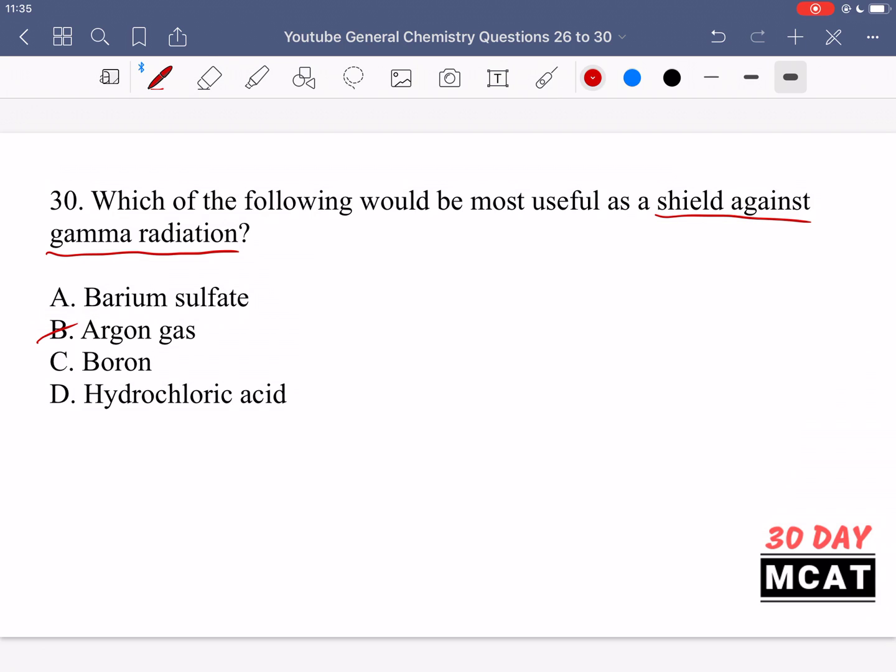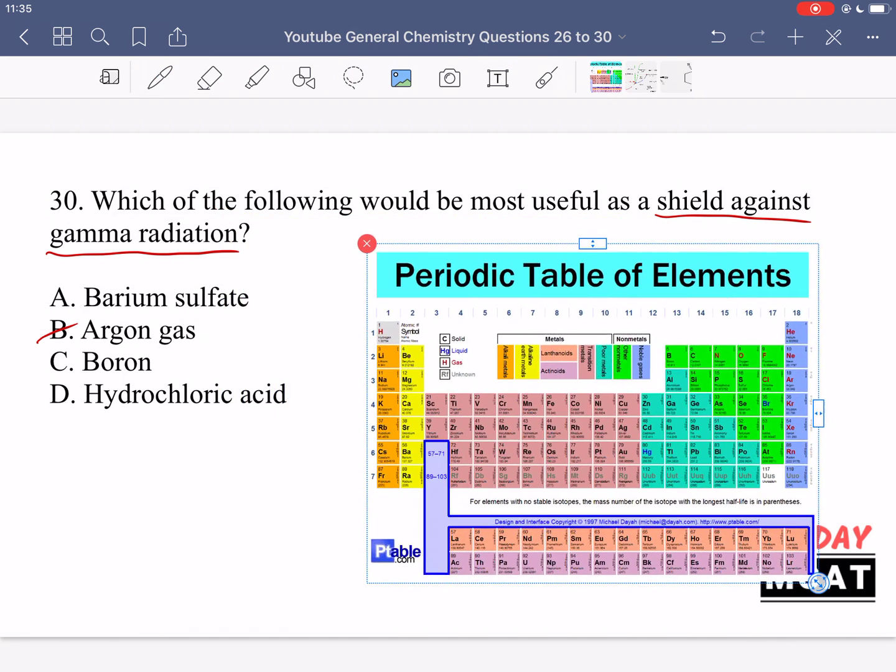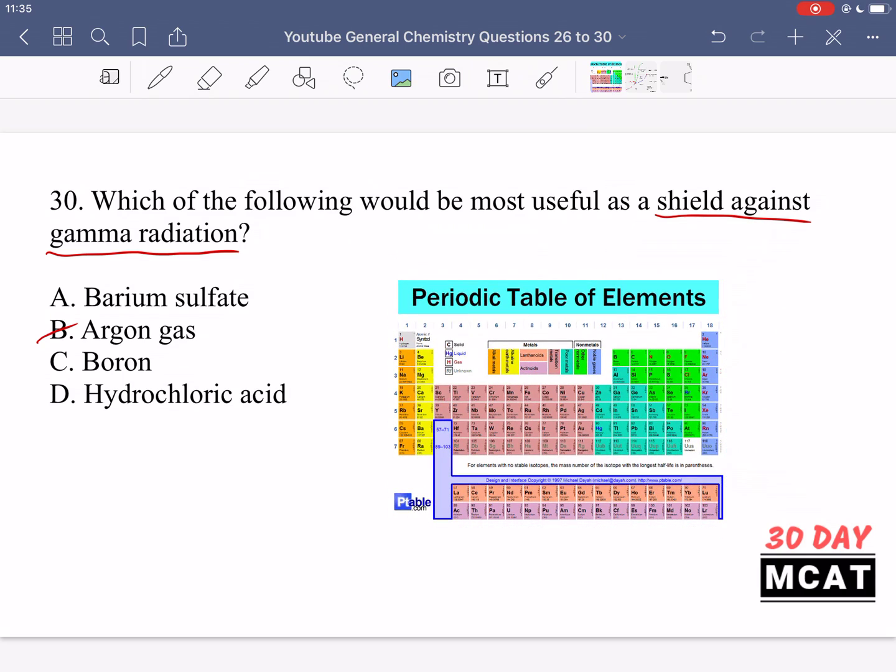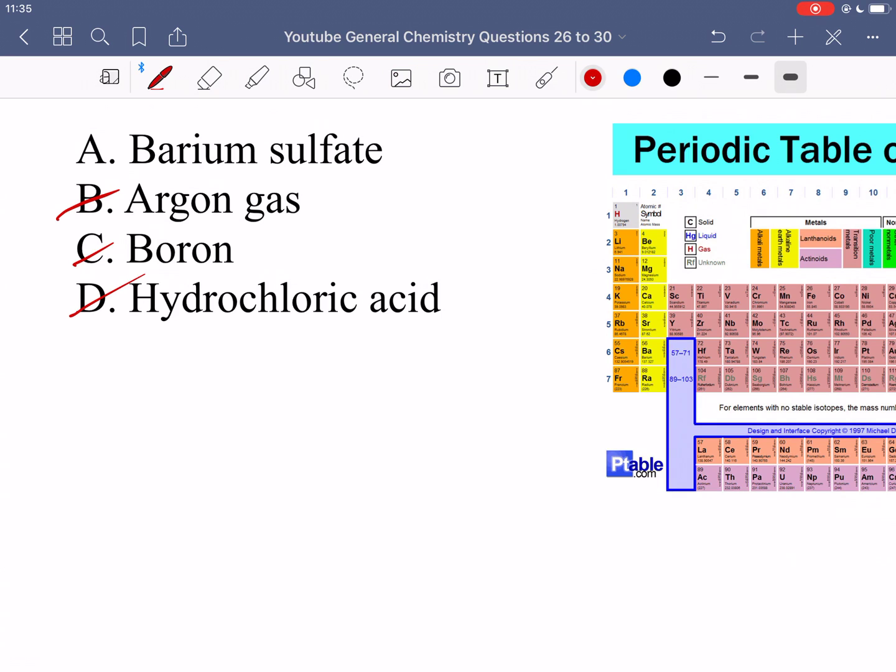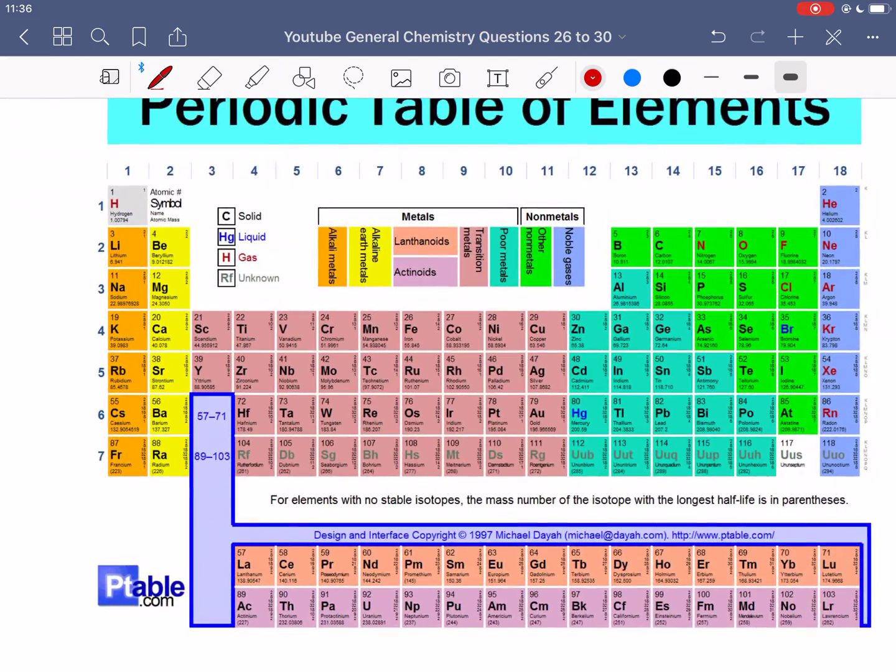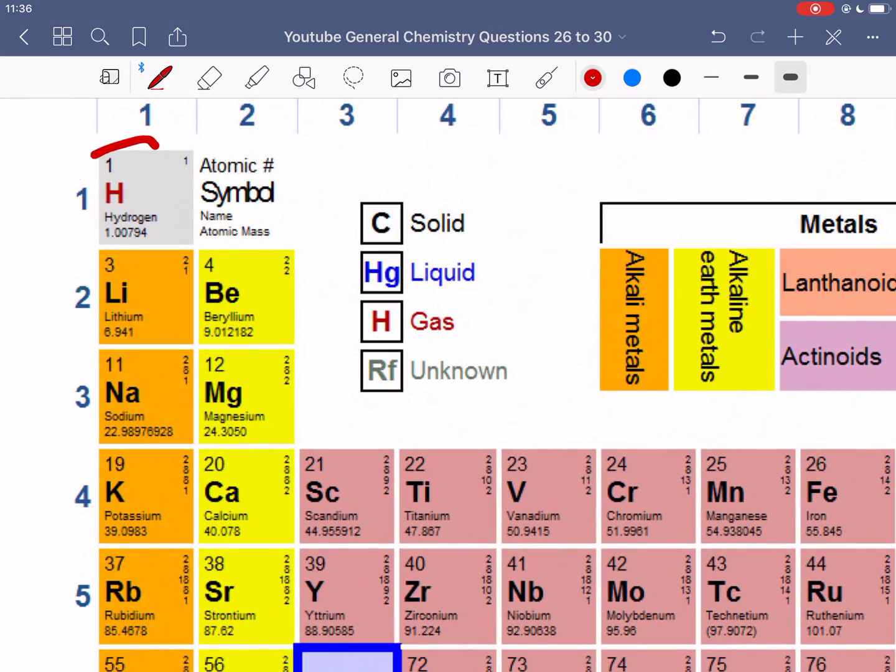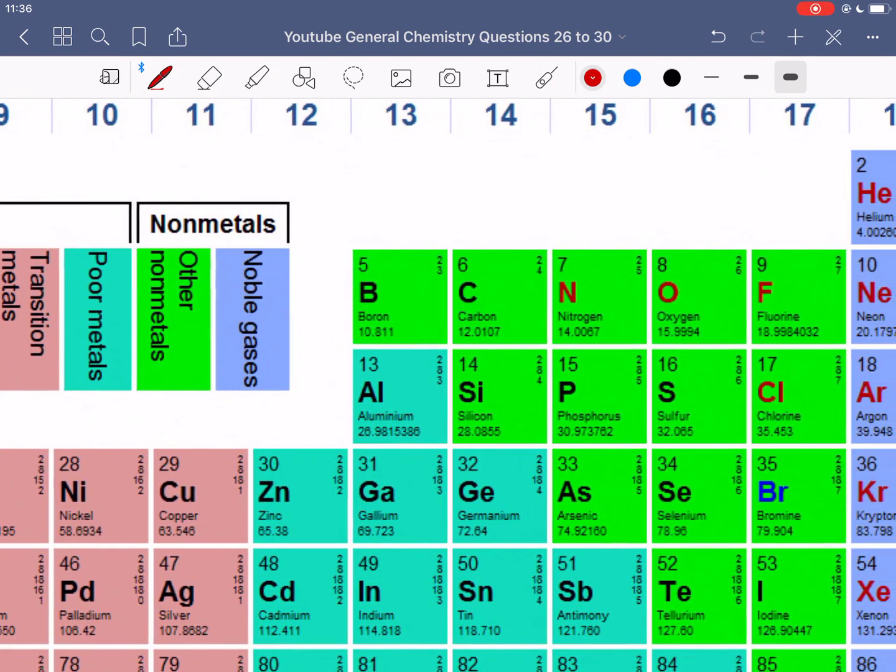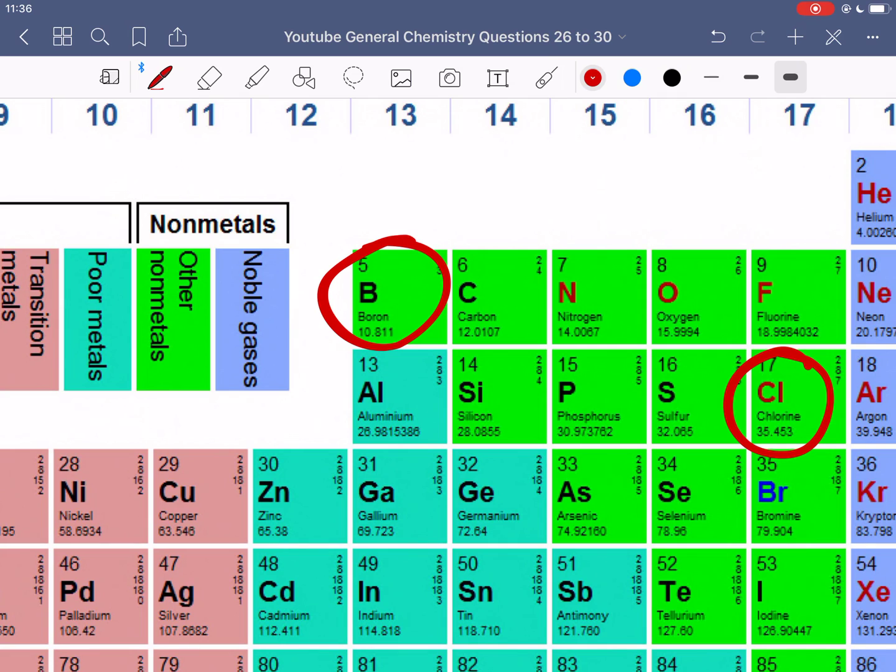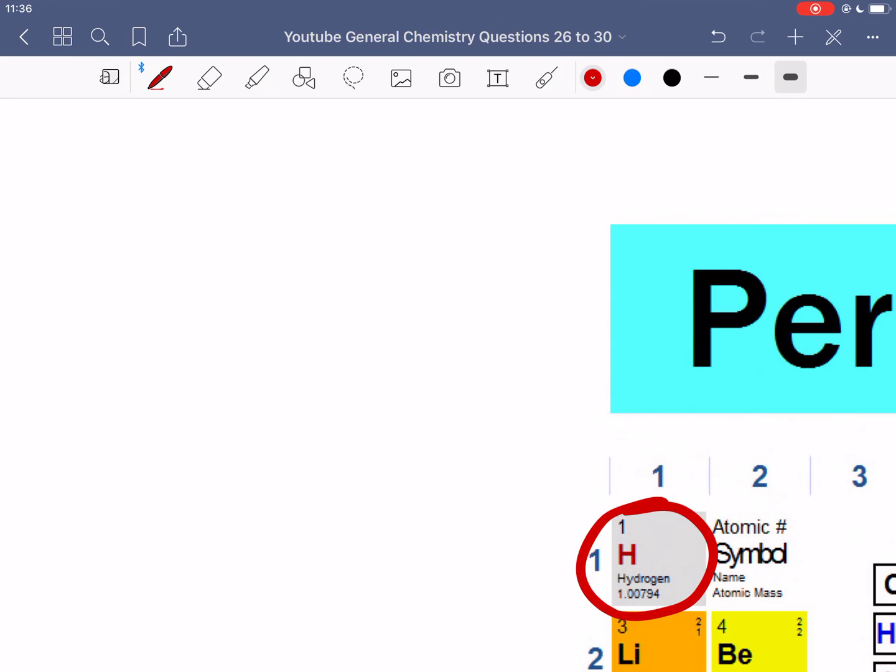It's better to use a solid for sure. Because of that, we're going to remove argon gas. And then if we know our relative positions on the periodic table for these elements, we can see that options C and D are boron and hydrogen chloride, so HCl. H is over here, it has the smallest nucleus.